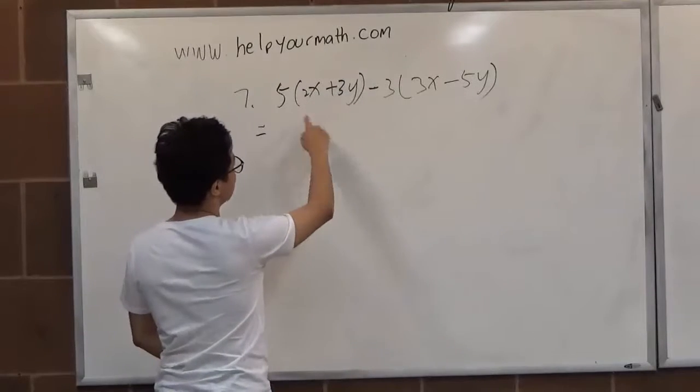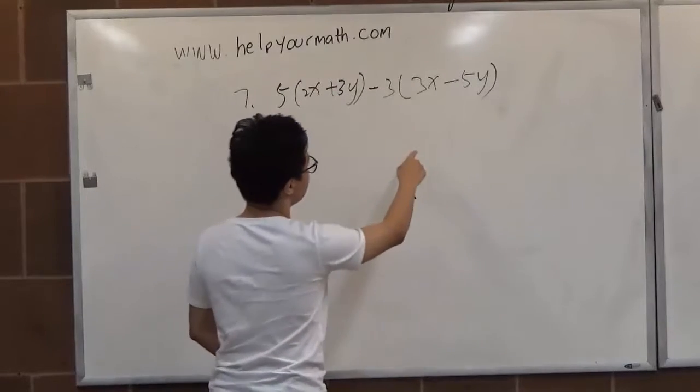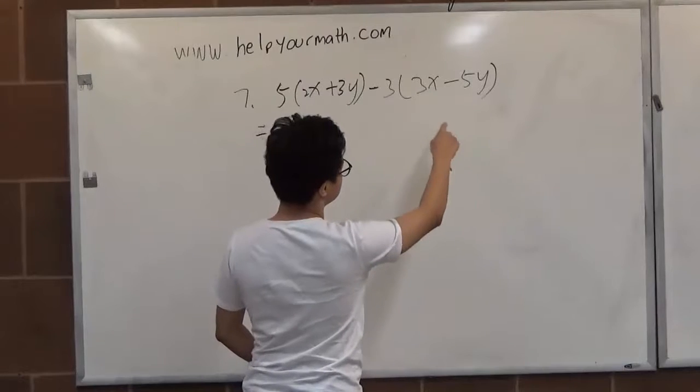5 inside the parentheses, 2x plus 3y, minus 3 inside the parentheses, 3x minus 5y.